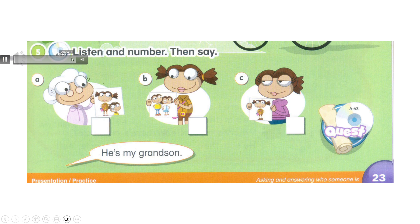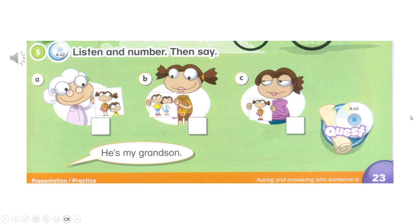Track A42. Page 23. Activity 5. Listen and number. Number 1. She's my cousin. Number 2. He's my uncle. She's my aunt. Number 3. He's my grandson. She's my granddaughter. Number 3. He's my mother.